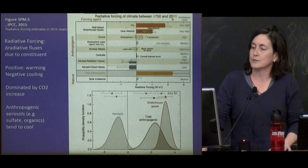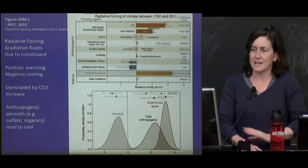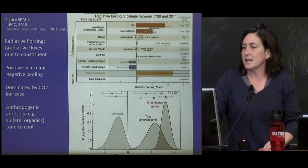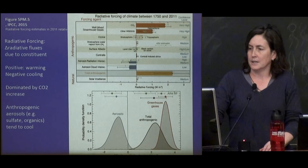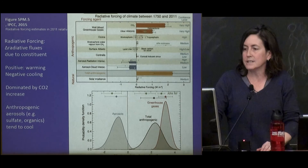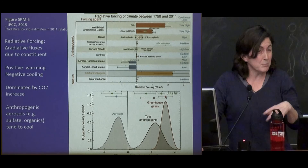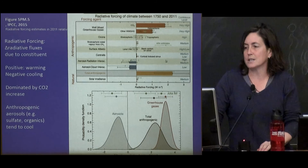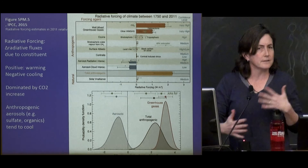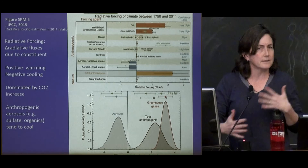This graph is the radiative forcing of climate between 1750 and 2011 from the IPCC. Here's our CO2 — the main driver of warming. The other greenhouse gases contribute some but not as much as CO2. We have land use surface albedo, which is probably a cooling effect, and then aerosols, which are really uncertain with a huge error bar — but are probably cooling the planet a little bit. Everything on the warming side is here, and the aerosols and land use might be cooling a little bit.